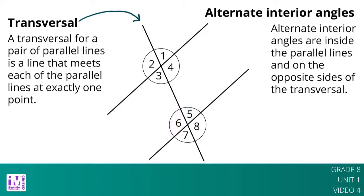Using what we know about vertical angles, adjacent angles, and alternate interior angles, we can find the measures of any of the eight angles created by a transversal if we know just one of them. For example, starting with the fact that angle 1 is 70 degrees, we use vertical angles to see that angle 3 is 70 degrees. Then we use alternate interior angles to see that angle 5 is 70 degrees. Then we use the fact that angle 5 is supplementary to angle 8 to see that angle 8 is 110 degrees, since 180 minus 70 equals 110.